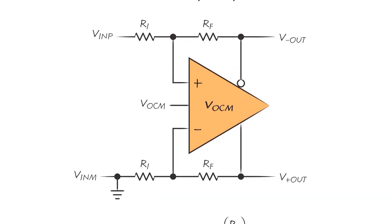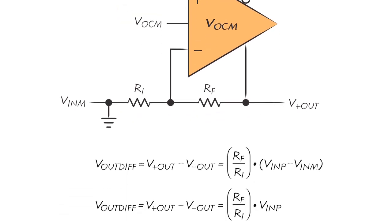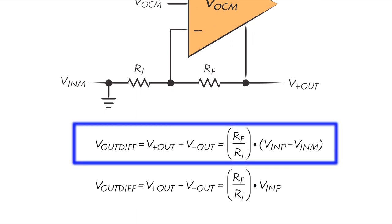You usually apply feedback using four resistors, as shown here. The gain is set by the ratio of the feedback resistors to the input resistors. Notice the equation: the difference between the two outputs is determined by the difference between the two inputs, not by the actual voltage on either of the inputs separately.